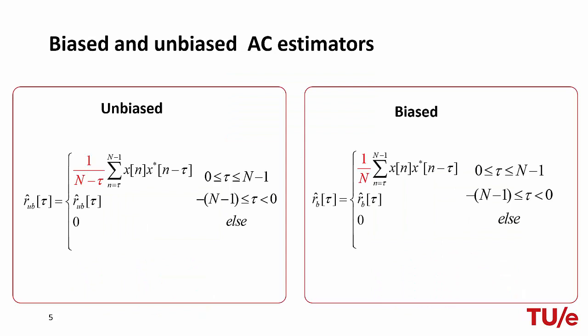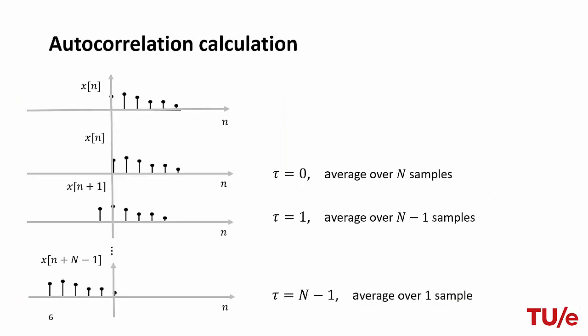Let us first recall that when we calculate the autocorrelation of a signal of length N, we can use a biased or unbiased estimator of this function. The difference mainly resides in the normalization factor, as highlighted in the slides in red. Looking at the calculation of the autocorrelation for L lags, as the lag approaches the edges, the number of products over which we are averaging decreases. For lags close to the signal length, the number of products reduces considerably. At the limit, if we calculate the autocorrelation for lag N-1, we are averaging over only one product.